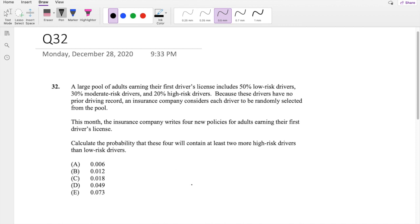So there's three types of licensed people: low risk, moderate risk, and high risk. And they each have a probability of 0.5, 0.3, and 0.2.